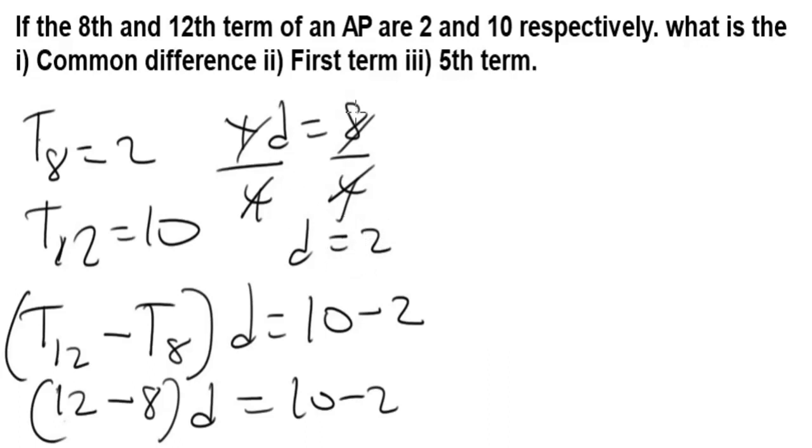Now that we have the common difference to be 2, to get the first term all you have to do is remember that the general formula for arithmetic sequence is a plus (n-1) times d.